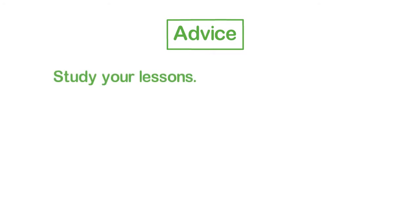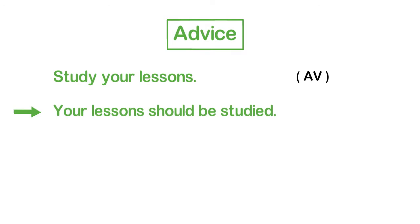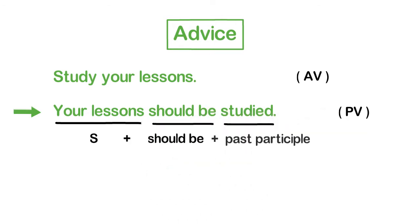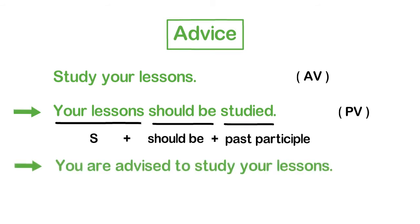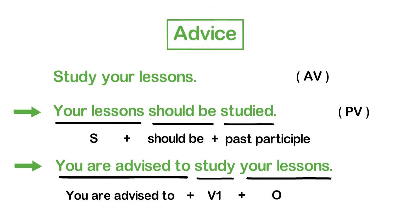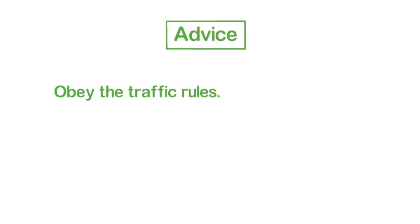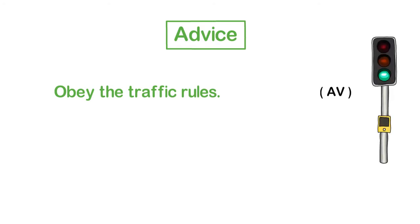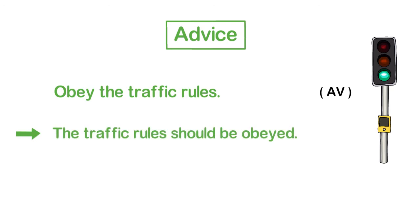Now let's change imperative advice into passive. 'Study your lessons' can be changed into passive in two ways: 1. 'Your lessons should be studied' — subject + should be + past participle. 2. 'You are advised to study your lessons' — You are advised to + first form of the verb + object. Another example: 'Obey the traffic rules' becomes 'The traffic rules should be obeyed,' or 'You are advised to obey the traffic rules.'